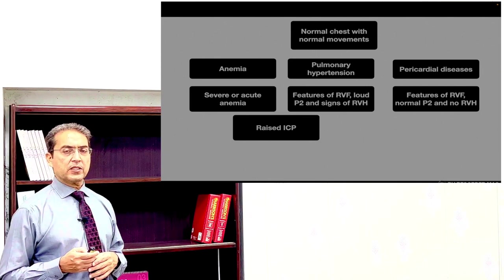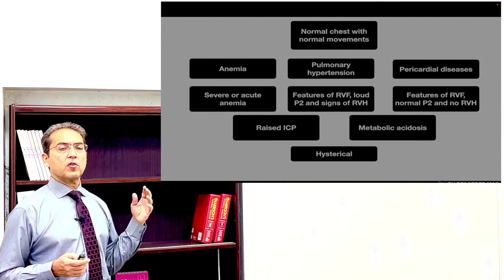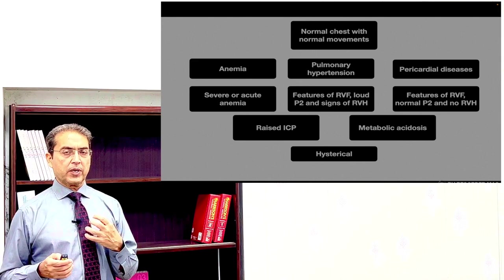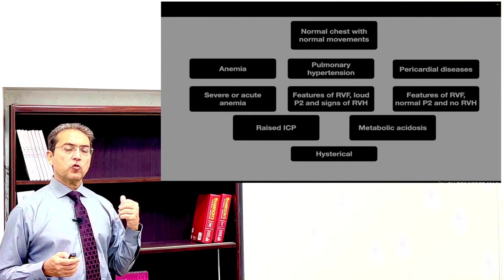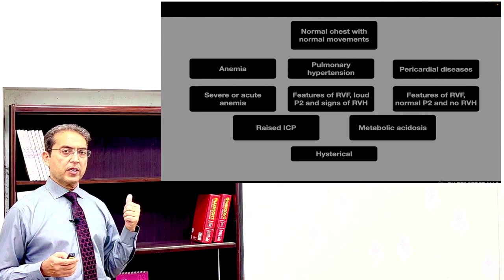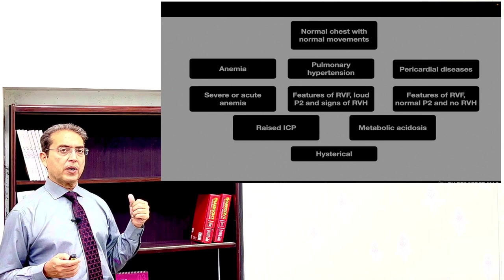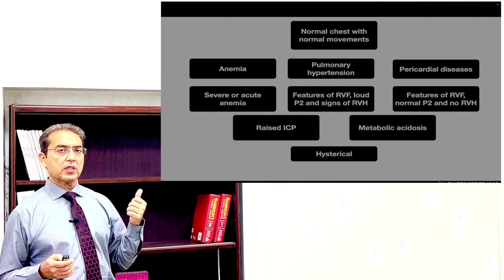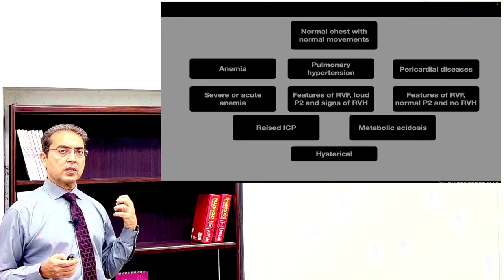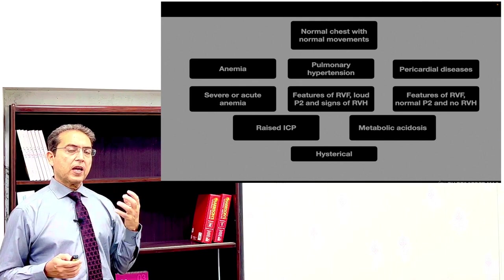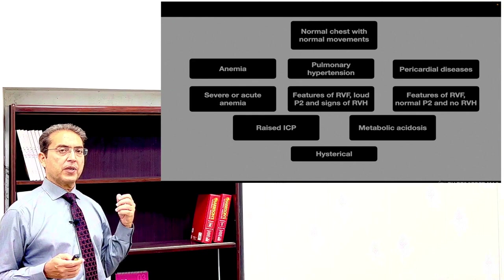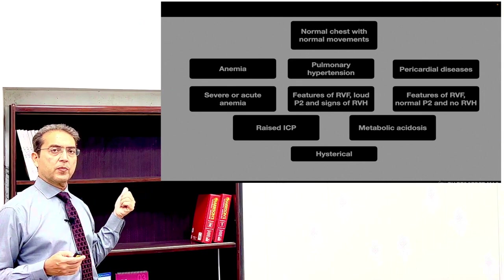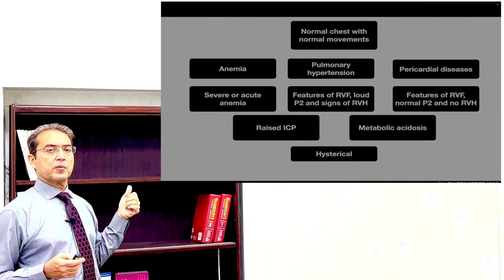Patients may also have dyspnea due to raised intracranial pressure, metabolic acidosis, or hysterical breathing. To summarize the algorithm: when you see a patient with shortness of breath and symmetrical findings, assess whether the chest is hyperinflated or not. If hyperinflated with reduced movements — COPD; if hyperinflated with normal movements — asthma. If the chest is not hyperinflated with reduced movements — restrictive disease like interstitial lung disease or heart failure. If normal chest with normal movements — consider anemia, pulmonary hypertension, pericardial disease, raised intracranial pressure, metabolic acidosis, or hysterical breathing.